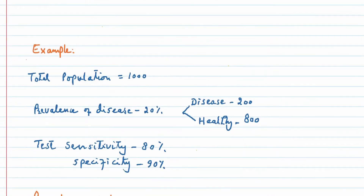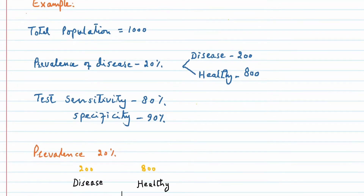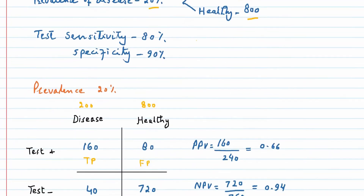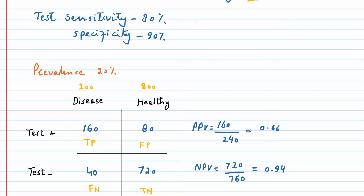Suppose we have a population of 1000 people in which the prevalence of disease is 20%. Based on this prevalence, 200 people will have the disease while 800 people will be healthy. We have a diagnostic test that has a sensitivity of 80% and specificity of 90%. We can calculate the true positive and false negative rates in the 200 people with disease based on the sensitivity of the test.